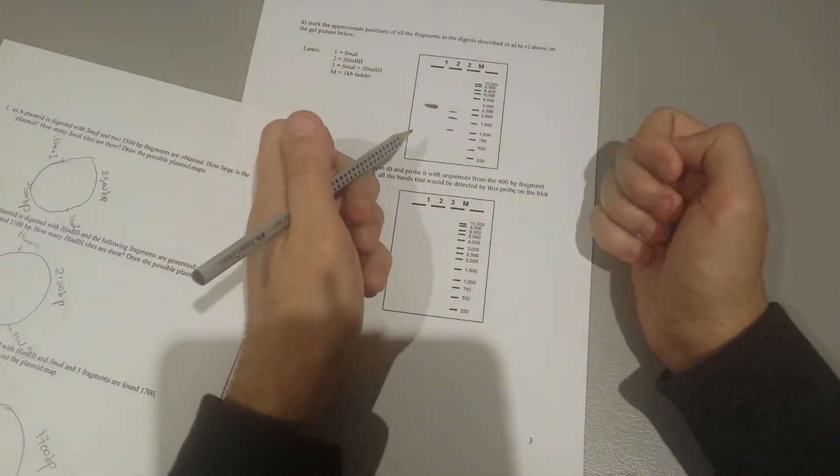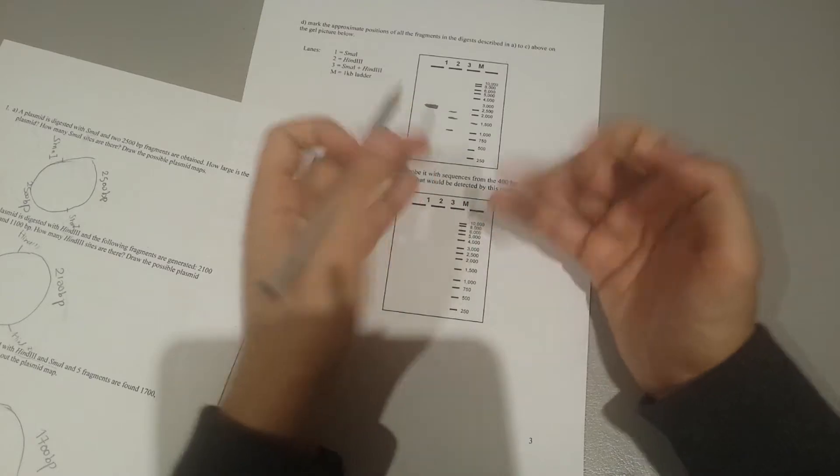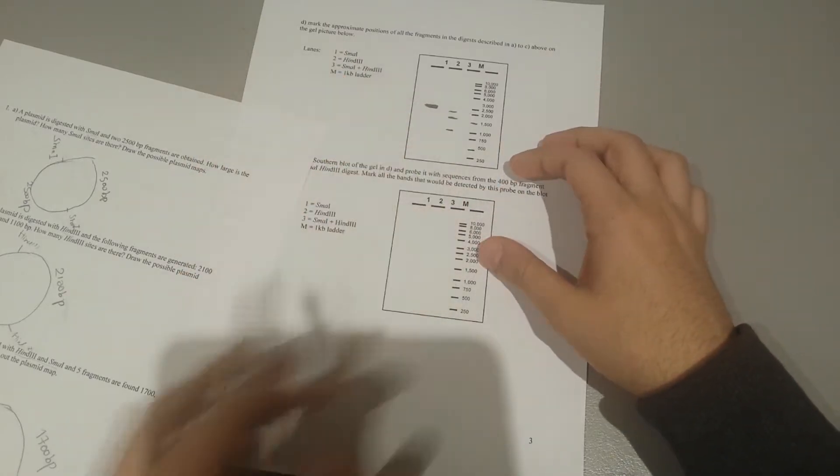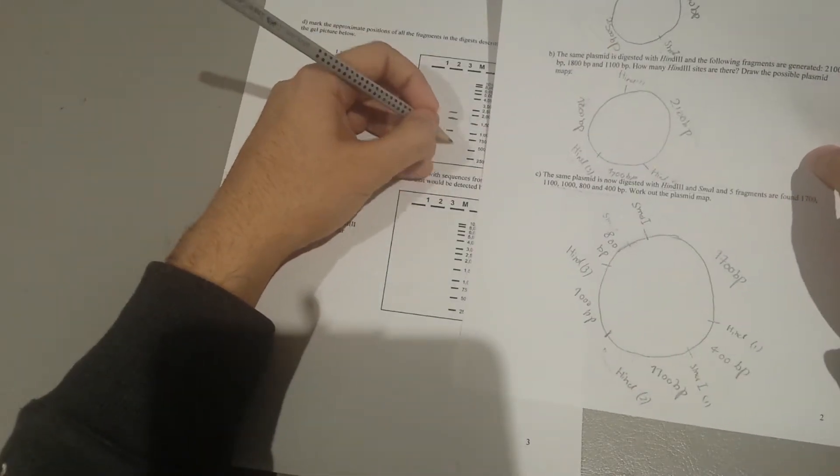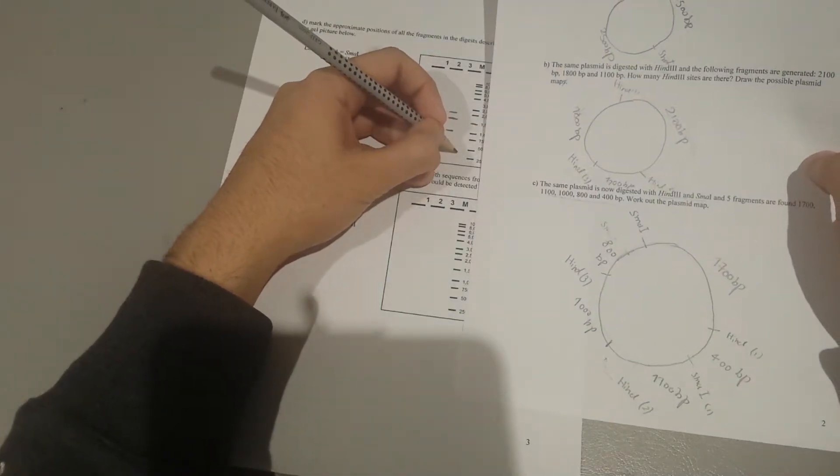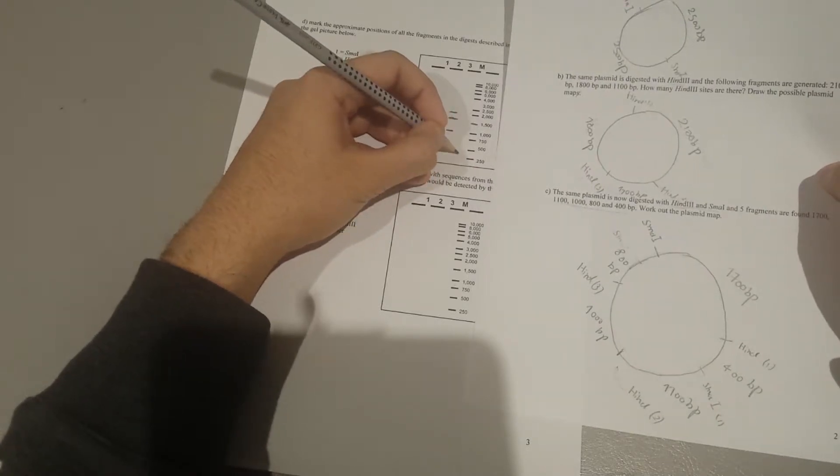We had how many sites? We had 400, 800, 1000. So you're going to just find it from here. We had 400, didn't we? So we had 400.